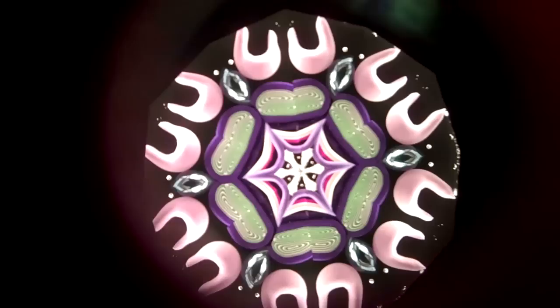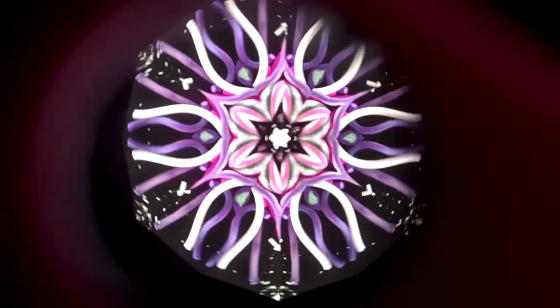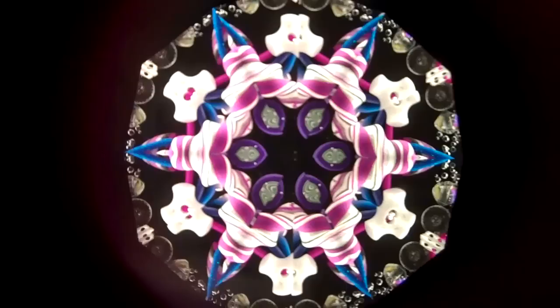Here is the best part of the Spirit Kaleidoscopes. This wonderful two mirror system which means the third side of the triangle is black to absorb light but it creates this beautiful round rose window type image.